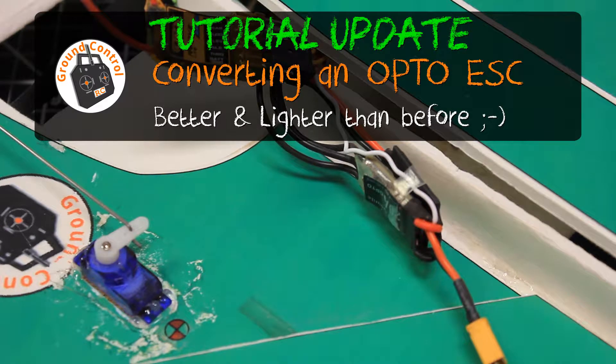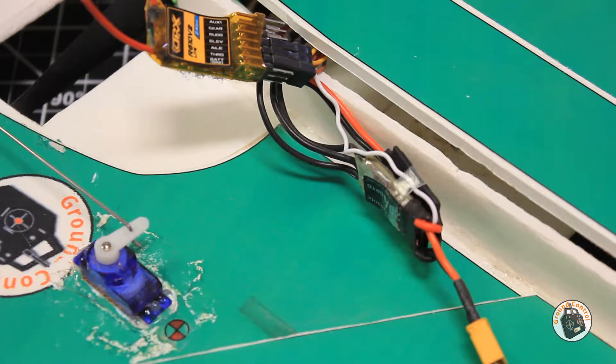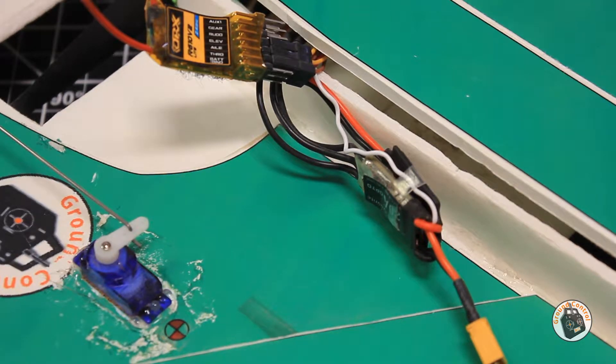Welcome to Ground Control. This is a tutorial update on converting the opto ESC to a non-opto ESC by attaching a switching voltage regulator to the ESC. I will provide a link in the show notes to the original tutorial. This is just a brief update to that tutorial.